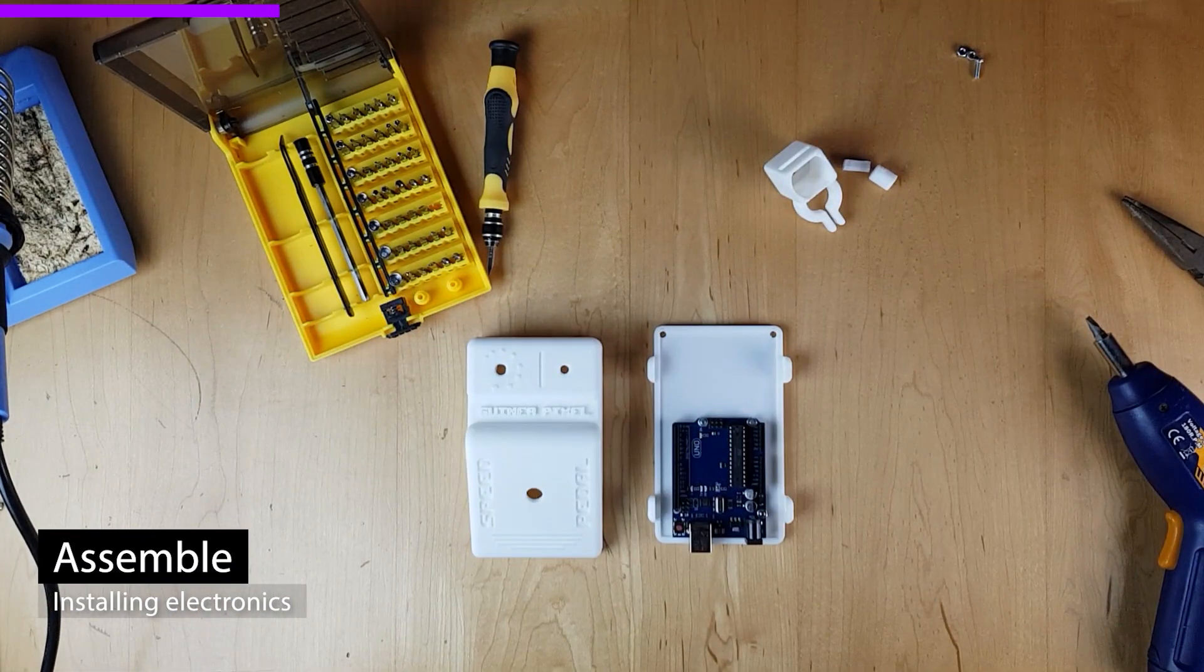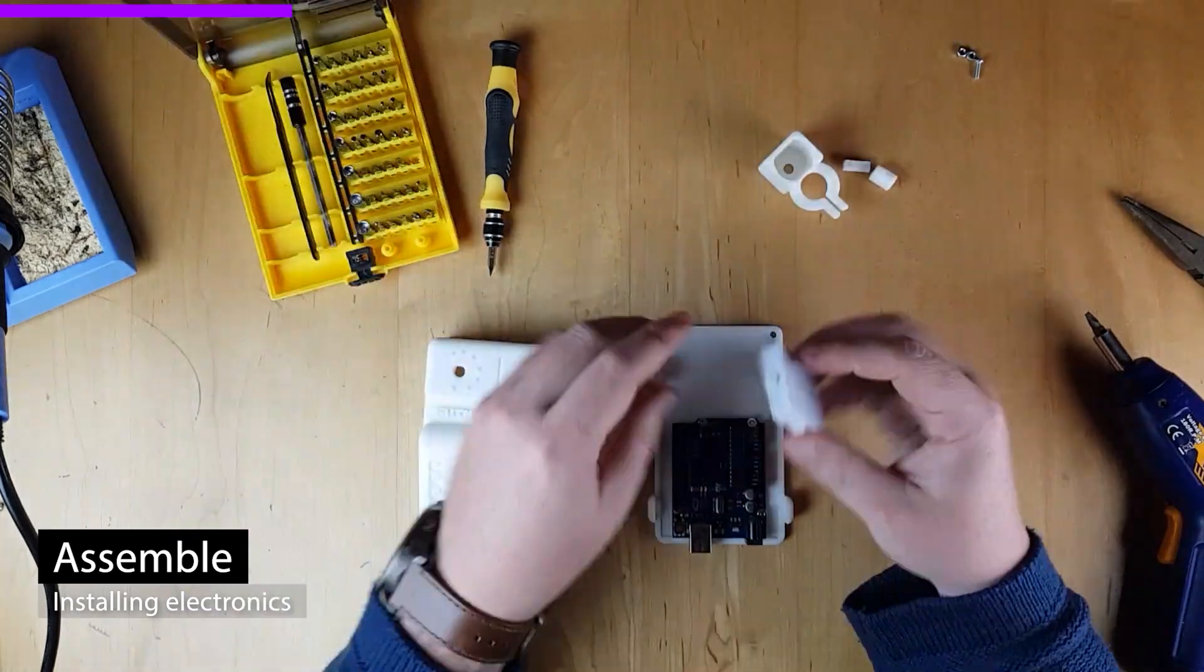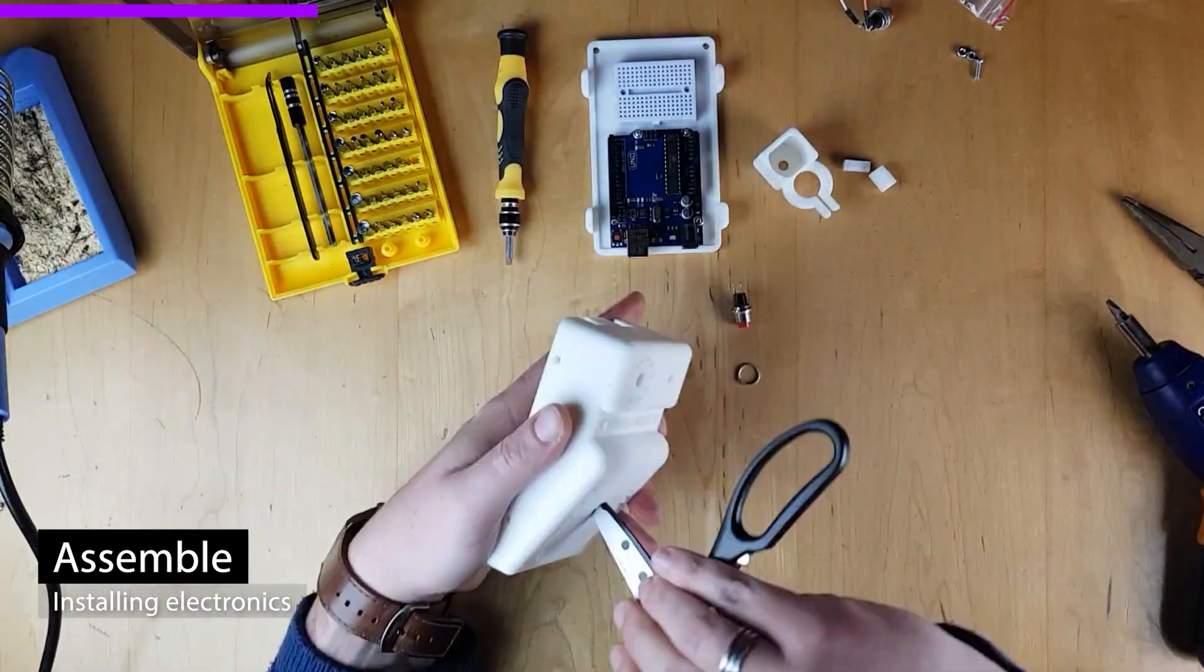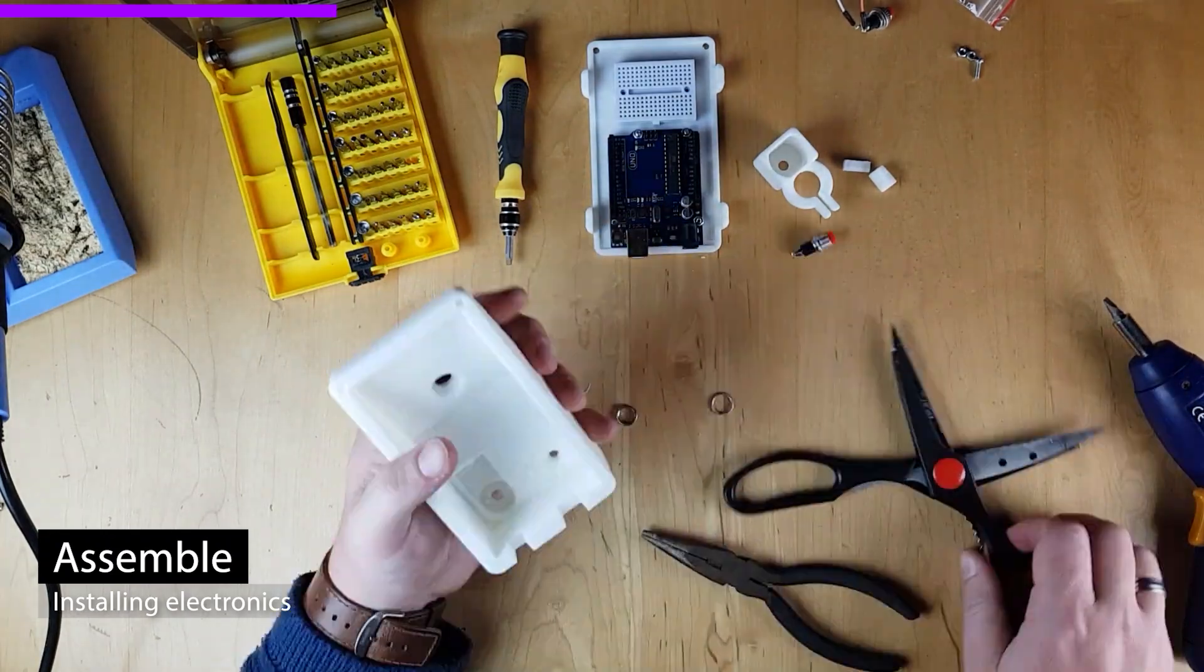For example, the potentiometer wasn't fitting exactly how I wanted. Just take a normal kitchen scissor and slice some plastic away. The same counts for the LED light and push button.